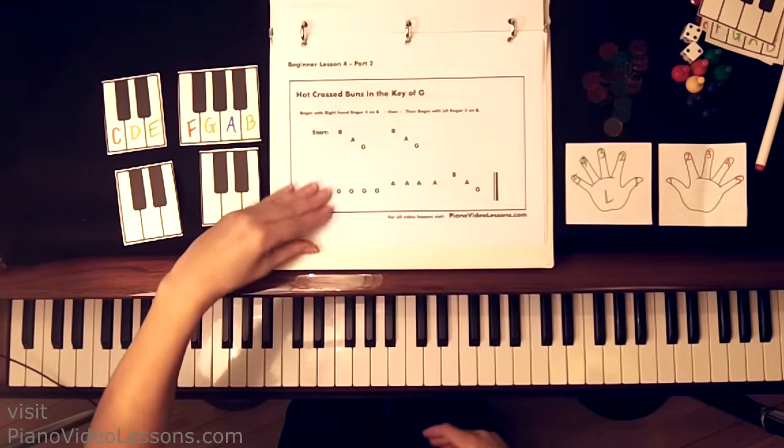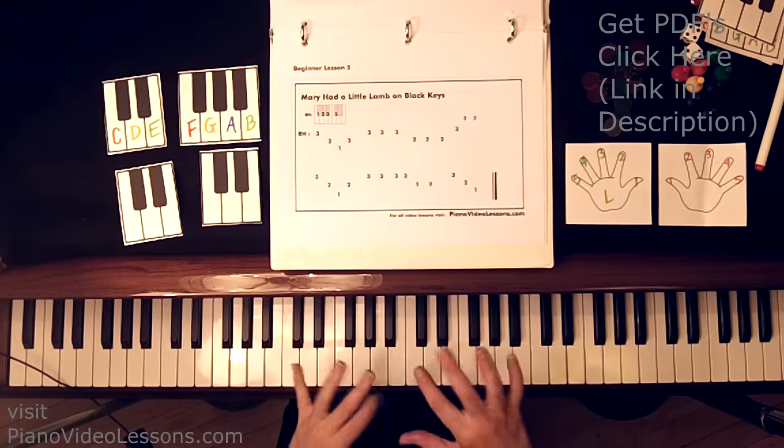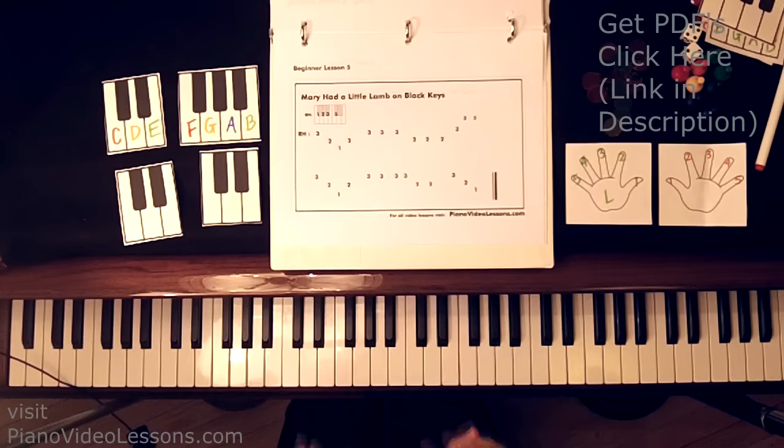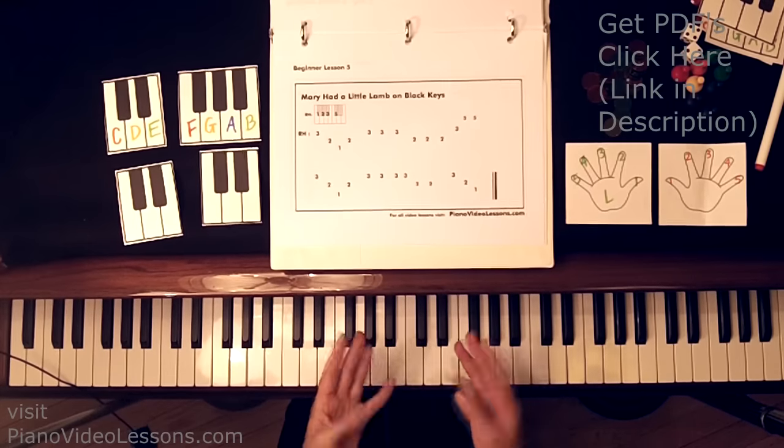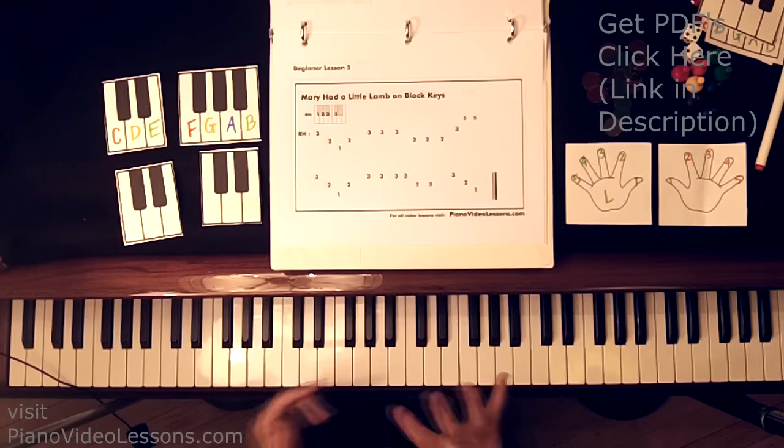In lesson 4, we learned to play hot cross buns in two keys, the key of C and the key of G. And you probably noticed when we played that song, we really were only using three fingers on each hand. So this next song, it's Mary Had a Little Lamb, and we're actually going to use now the two fingers that we didn't play before,